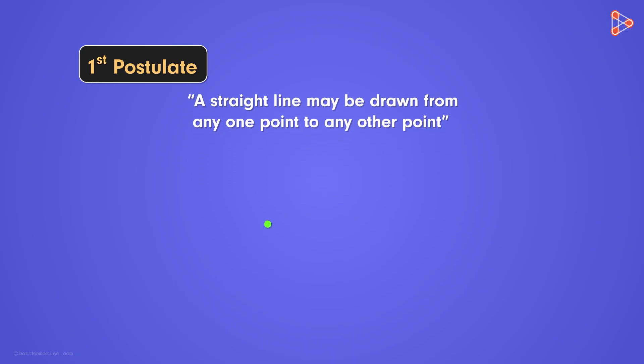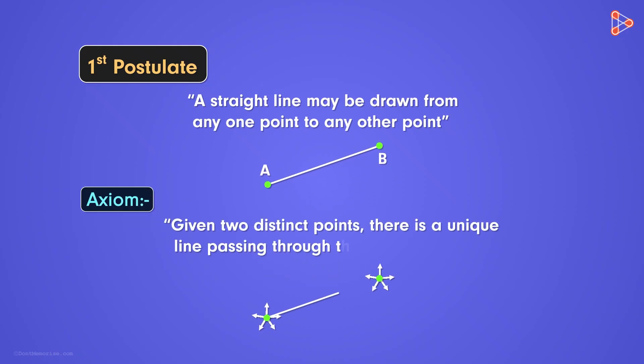Now if we want to join them, we see that we can draw only one straight line that will connect the both of them. We can take the help of Euclid's axiom that states, given two distinct points, there is a unique line passing through them. So a line from A joining B is AB. Similarly the line joining A from B is also AB.